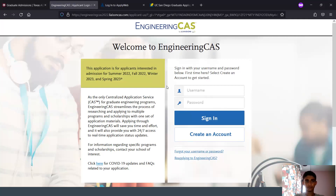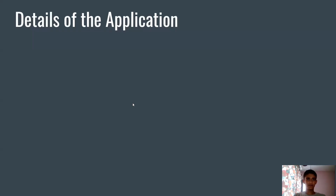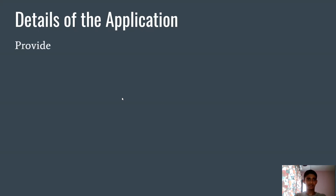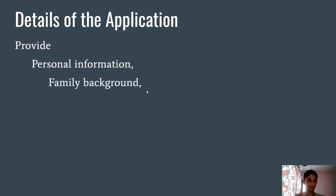Now let's go into a bit of detail about what information you need to provide in these applications. After creating an account, the first section is personal information — your name, date of birth, and place of birth. Make sure you have your passport ready and use only the information on your passport, not other ID cards. Next is family background — your parents' details, email address, phone number, home address, current address, and permanent address. I'll get into all the details one by one in upcoming videos.